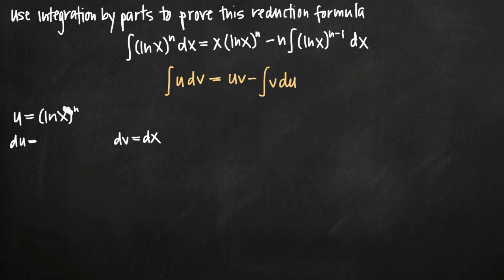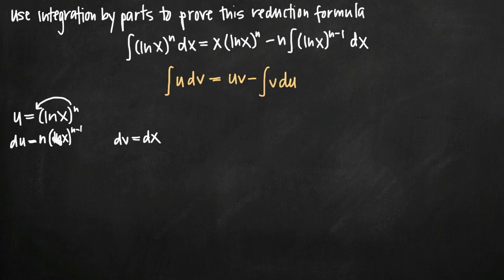For example, if our function were just x to the n, the derivative would be n times x to the n minus 1 using power rule. So we bring the exponent down in front: n times ln of x to the n minus 1. That's the derivative of the outside function — we used power rule and ignored the inside for now. Because we're using chain rule, we multiply by the derivative of the inside function. The derivative of ln of x is 1 over x, so we multiply by 1 over x, and add dx.